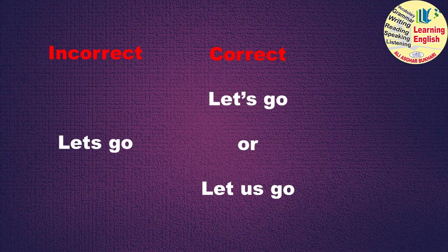English speech میں contractions کا استعمال بہت زیادہ ہوتا ہے اور جب ایسے expressions کو لکھا جائے تو ان میں apostrophe use کیا جاتا ہے۔ لیکن چونکہ بولنے میں apostrophe آتا نہیں، تو students لکھتے ہوئے ان contraction والے expressions کو جوڑ کے لکھ دیتے ہیں۔ مثال کے طور پر 'let's go' سنتے ہیں تو 'let's' میں 'let' کے بعد apostrophe اور پھر 's' لکھا جائے، یا formal writing میں 'let us go' لکھا جائے۔ بغیر apostrophe کے لکھنا غلط ہوگا۔